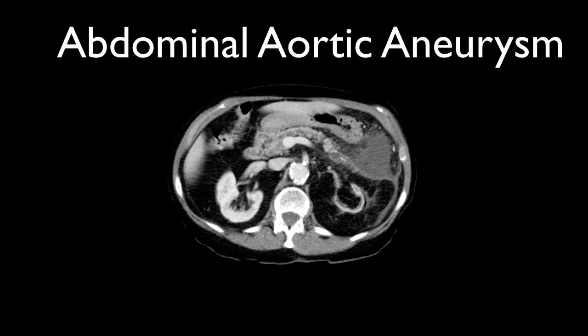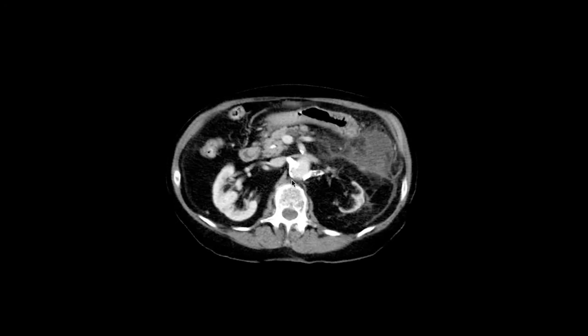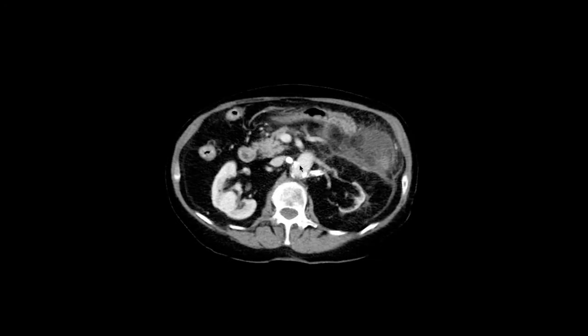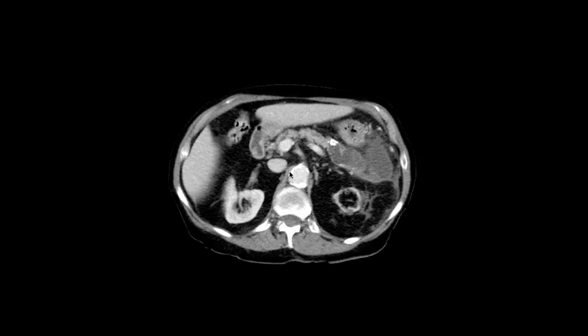This is a screenshot of an abdominal aortic aneurysm illustration. The patient is showing an image of a CAT scan of the abdomen and pelvis, and we are tracking the aorta. This is the aorta.